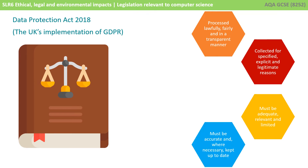The next principle is accuracy. The data you collect must be accurate, and where necessary, kept up to date. Every reasonable step must be taken to ensure that personal data that isn't accurate is corrected. To fulfil this principle, you must update data if a customer notifies you of a change. You must also erase the data if it's no longer necessary, and under the regulation, data subjects have the right to rectification, and this must be fulfilled within a month.